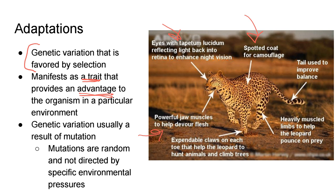Those genetic variations are usually a result of mutation. Mutations are random — the organism can't direct them. A leopard was born with eyes that made it better suited to hunt at night, so it got more food, survived, and passed that trait on. Mutations are random and cannot be directed based on the specific environment.